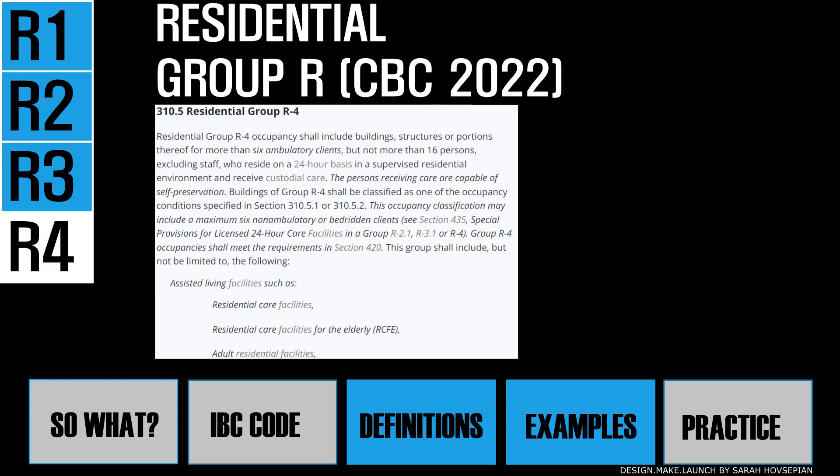R4 residential group includes more than six ambulatory clients, but not more than 16 persons excluding staff, who reside on a 24-hour basis in a supervised residential environment and receive custodial care. This occupancy group may be used instead of group I to meet specific code requirements.